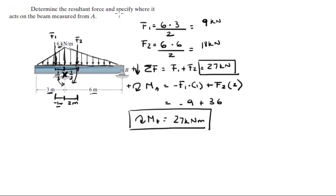Now if you want to know where it acts, then you know that the moment is equal to the resultant force times the distance where it acts. Is it going to be to the left of A or to the right of A? It's going to be to the right of A because the moment is positive; therefore it's going clockwise. Since it's going clockwise, it has to be to the right of A. So the moment of A is 27, FR is 27, D is the variable we're trying to find, so D is equal to 1 meter to the right of A.